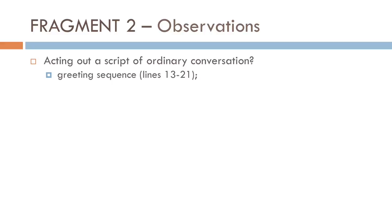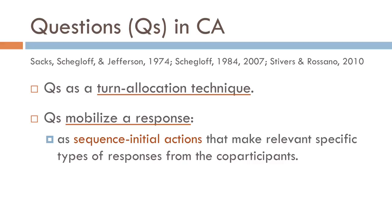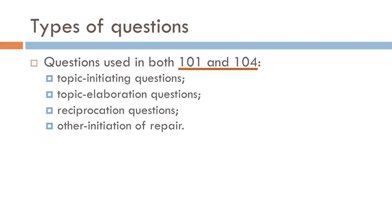These students seem to be acting out a script of ordinary conversation. They engage in a greeting sequence and speak with very short turns. The topics are prompted through questions, and they do comply with the test instructions to ask and answer questions. I decided to look at how students actually ask each other questions. I found that both first- and fourth-semester students use topic-initiating questions, topic-elaboration questions, reciprocation questions (the magic formula 'and you?'), and other-initiation of repair, though there are differences in how students at different proficiency levels use these.